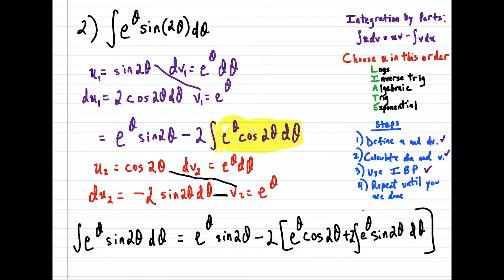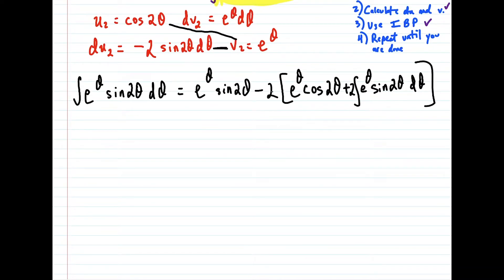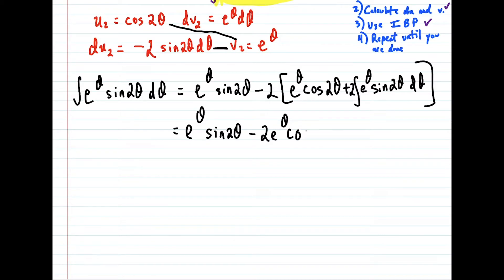And once you get to this step here, it doesn't seem like we accomplished much. But if we distribute this negative 2 now, we're going to have e to the θ sine 2θ, minus 2 e to the θ cosine 2θ, minus 4 times the integral of e to the θ sine 2θ dθ.